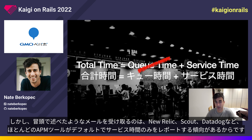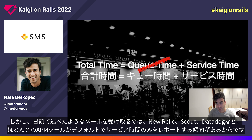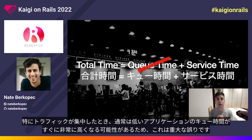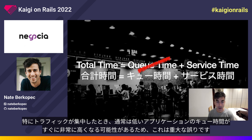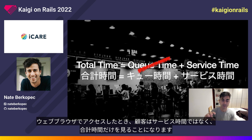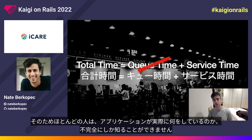The reason I get emails like the one I mentioned at the beginning is because most APM tools like New Relic, Scout, and Datadog tend to report only the service time by default. At 80% or more of my clients, they have no queue instrumentation at all when I first arrive. This is a critical mistake, because while queue time is usually low in applications, it can become really high really quickly, particularly when the site is under a lot of load. Your customers in their web browsers observe the total time when they click and wait for the response.